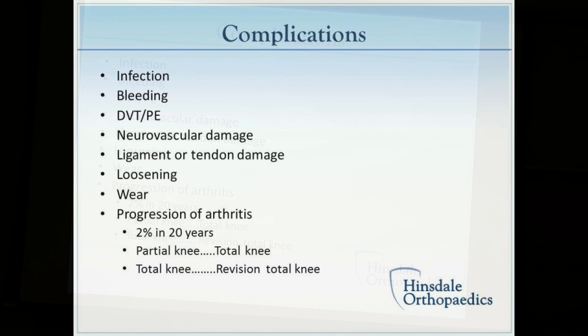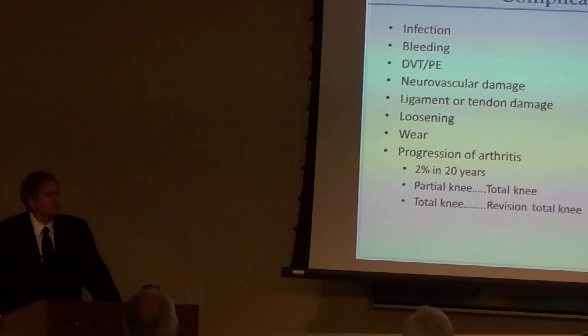There are ligaments we have to watch out for, but that's preventable by being cautious. Loosening of the prosthesis or wear are concerns that typically occur well beyond the procedure — 15 to 20 years or beyond. People always ask about partial knee replacement: what happens if the other side of the knee gets bad? Statistically it does happen, but it's only 2% in 20 years — very low. We can revise a partial knee to a total knee. If a total knee has to be revised, it becomes a revision total knee.